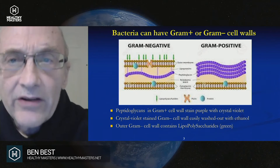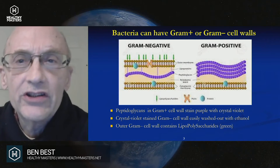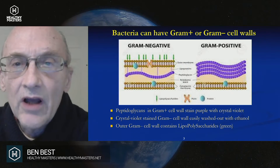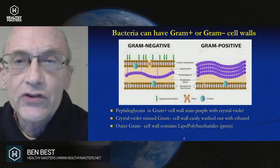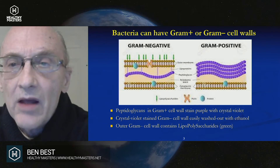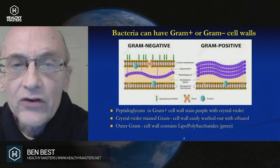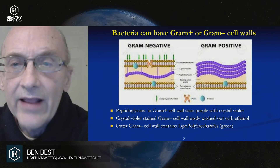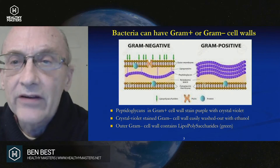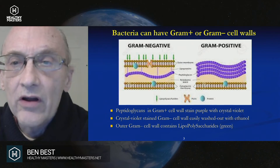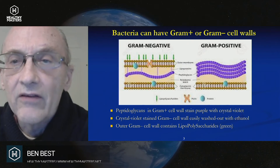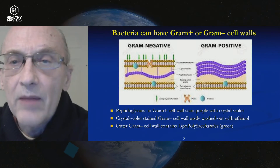Bacteria are generally distinguished as gram positive or gram negative, according to the gram stain, which is a crystal violet stain. The crystal violet stains peptidoglycans on the outer wall of the gram positive bacteria. You can see all the purple on the right-hand side there of the outer wall of the gram positive.